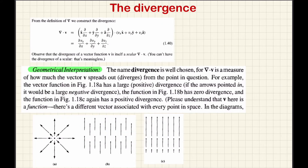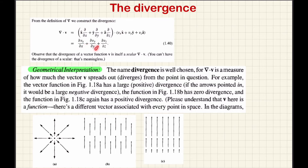Let us discuss about the divergence. For divergence, you take the dot product of the del operator with another vector. Del operator is x-cap ∂/∂x + y-cap ∂/∂y + z-cap ∂/∂z, dot product with a vector having x, y, z components in Cartesian coordinates. Taking the dot product of like components, you will get ∂Vx/∂x + ∂Vy/∂y + ∂Vz/∂z. That is how we define the divergence.